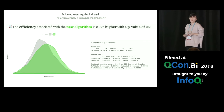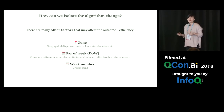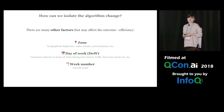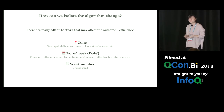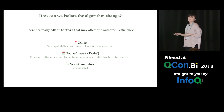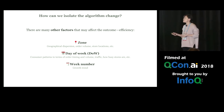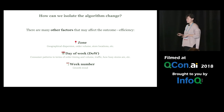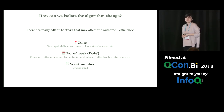This model is over-simplified because we know there are many other factors that may impact efficiency. For example, zone information: efficiency in San Francisco is probably a lot higher than many other zones that are more spread out and have fewer deliveries. Another example is day of week, which may have a huge influence on customers' ordering behaviors and traffic conditions. Another factor is week number, because of fast growth. So the question is: how can we control for all these factors and isolate the contribution of the algorithm change itself?